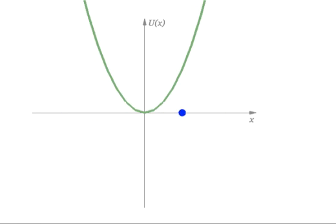The shape of the potential determines how the particle moves. For instance, a deeper potential, like this one, causes the particle to oscillate more tightly.